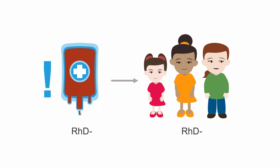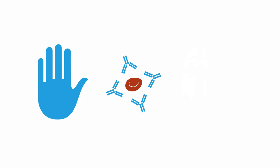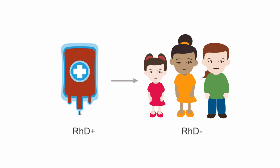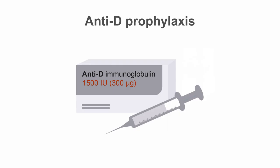In girls or women who are rhesus D negative and who may become pregnant in the future, it is important that rhesus D negative blood products are used in order to avoid immunization and the potential development of hemolytic disease of the fetus and newborn in future pregnancies. We will discuss this in more detail in a later chapter. If it is absolutely unavoidable to give D positive products to D negative women, you should provide anti-D immunoglobulin prophylaxis after the transfusion to prevent immunization.